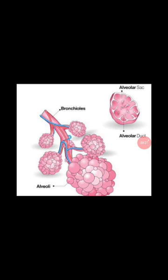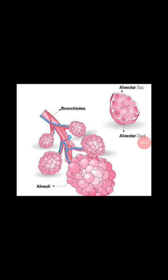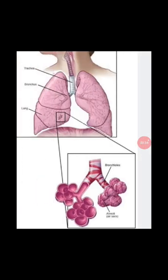The lungs are a pair of spongy organs located in the chest cavity. Carefully observe the size of the lungs — the right lung is larger than the left lung. This is because space is needed to accommodate the heart. The base of the heart is slightly tilted towards the left, so the left lung is smaller to provide that space. The lungs are protected by the ribcage.